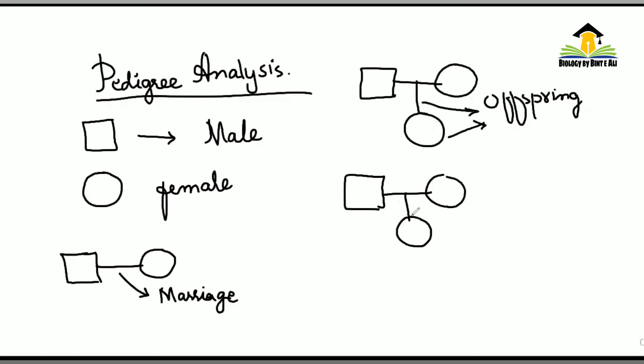Pehle dekho is tarah ki pedigree thi, ye show kar raha hai ki in dono couple ka ek hi offspring hai. Agar isi vertical line ke niche ek aur horizontal line aa jaye, ye express kar rahi hoti hai number of offspring ko, means ki ek se zyada offspring hai. Jaise yahan par ek daughter thi aur fir ye horizontal line lagakar humne further offspring ko mention kiya hua hai ki do daughters hain aur ek son hai.